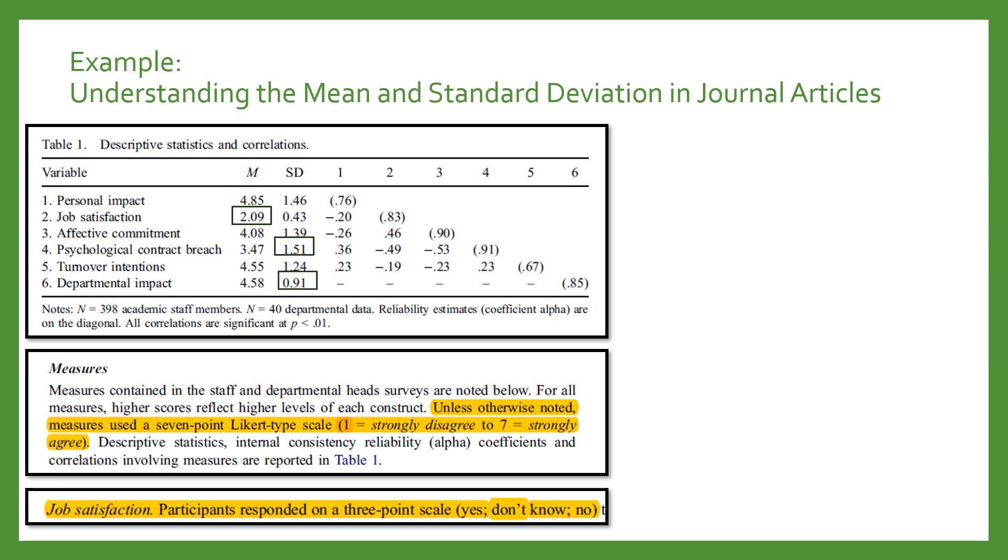Based on the standard deviations, there were pretty consistent responses from department chairs about the departmental impact of budget cuts, because the standard deviation was relatively small on a seven-point scale and definitely smaller than the mean. But there was some disagreement or inconsistent responses about the level of psychological contract breach or broken promises that people experienced. You know that because it has the largest standard deviation of all the variables that were measured.